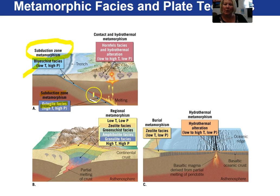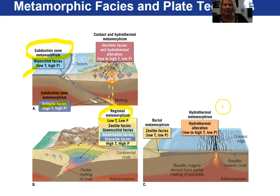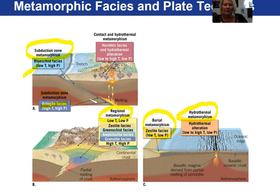Eclogite represents high temperature, high pressure metamorphism and would be found in the bottom part of the subducting slab. Once the ocean has been subducted and we have continental-continental interaction, we go from low temperature high pressure all the way to high temperature and high pressure — regional metamorphism. At divergent plate boundaries, hydrothermal metamorphism is associated, and burial metamorphism is a low temperature, low pressure metamorphism occurring in basins, with zeolite facies being the associated facies.